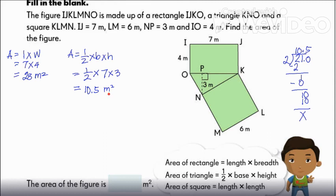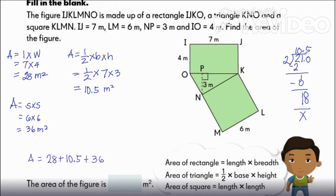That's why I got 10.5 square meters for the area of the triangle. For the last shape, this is a square, and the area formula for a square is side times side. Since one side is equal to 6 meters, multiplying by itself gives us 36 square meters. Now we are ready to combine all the areas of the three shapes. Combining 28 square meters plus 10.5 square meters plus 36 square meters, this will give us a sum of 74.5 square meters.